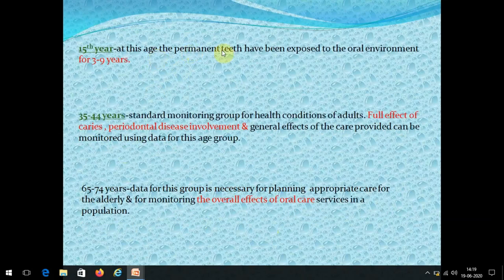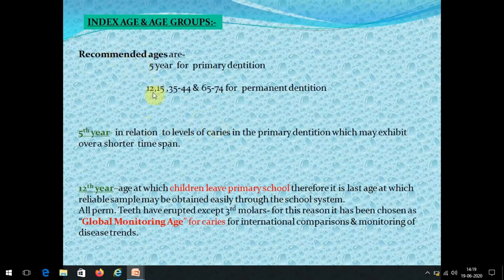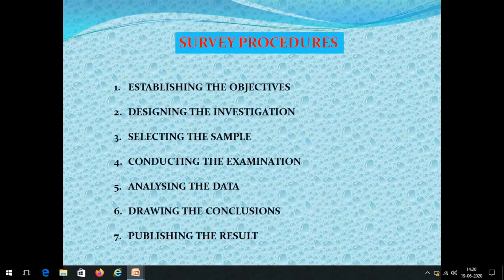Age 15: by this age, permanent teeth have been exposed to the oral environment for three to nine years, so caries experience can be assessed. Ages 35–44 are the standard monitoring group for health conditions in adults — the full effect of caries and periodontal disease is in action, allowing easy comparison of caries and periodontal status. Ages 65–74 are necessary for planning appropriate care for the elderly and for assessing the overall effect of oral health care. In pilot study, two of these five groups should be included with 12 being mandatory; for national pathfinder, three must be included.